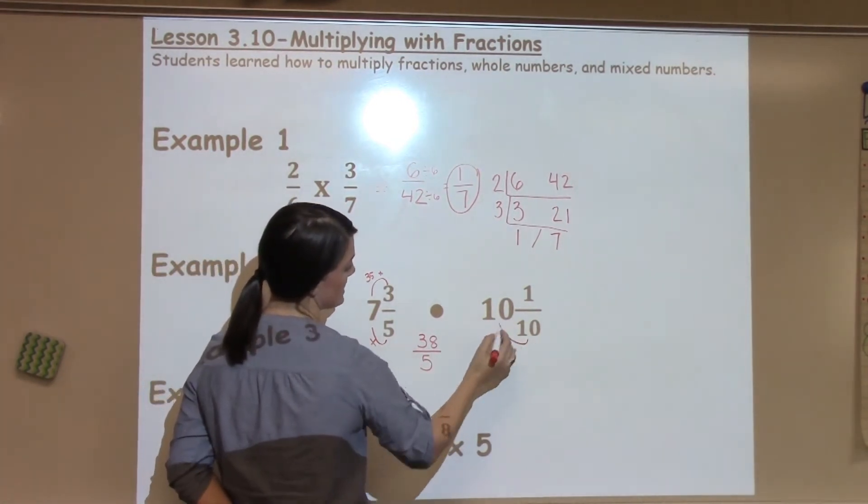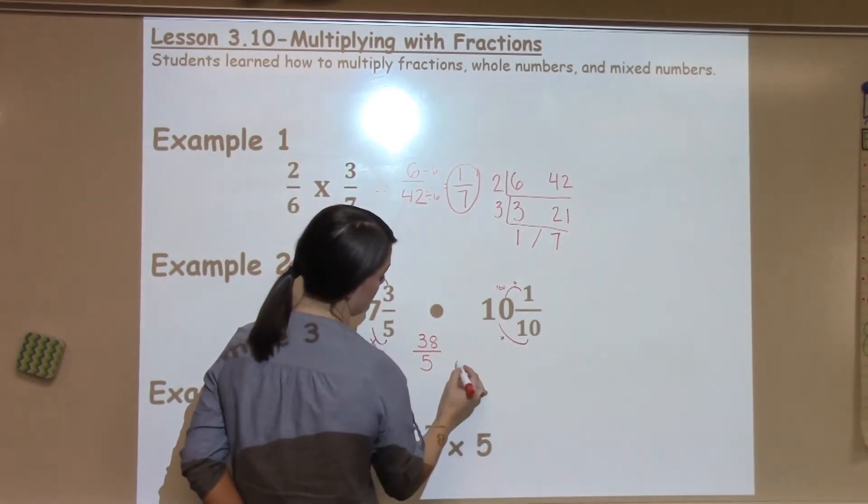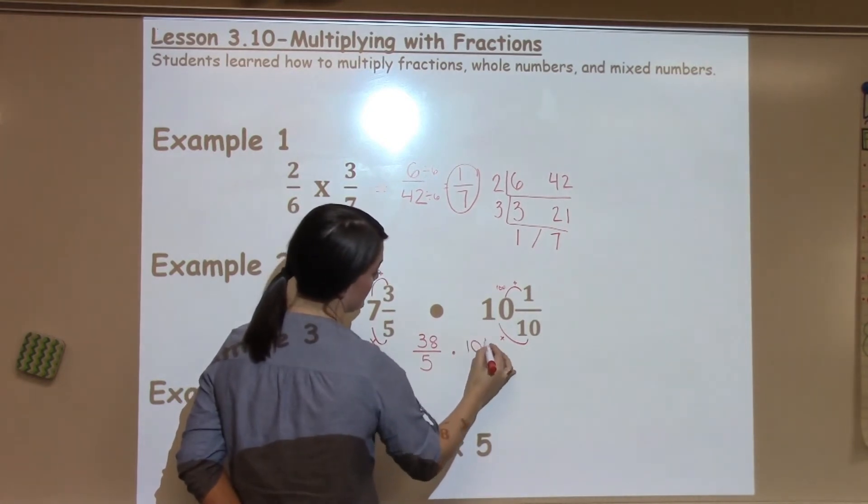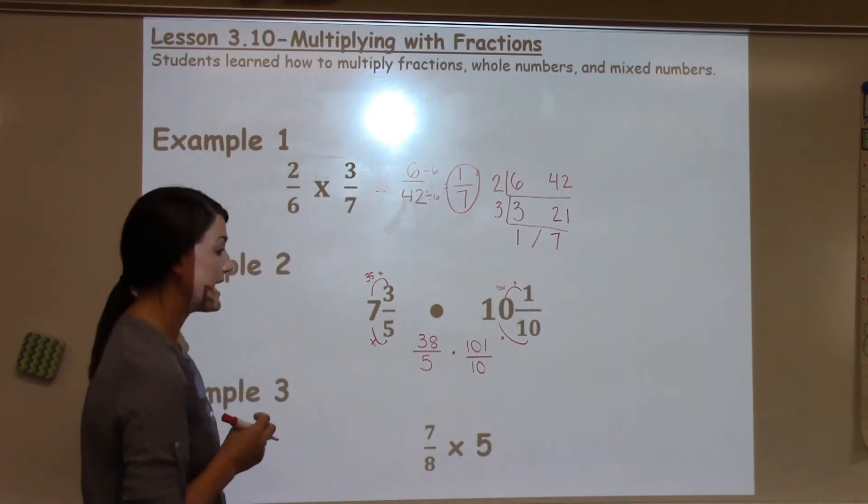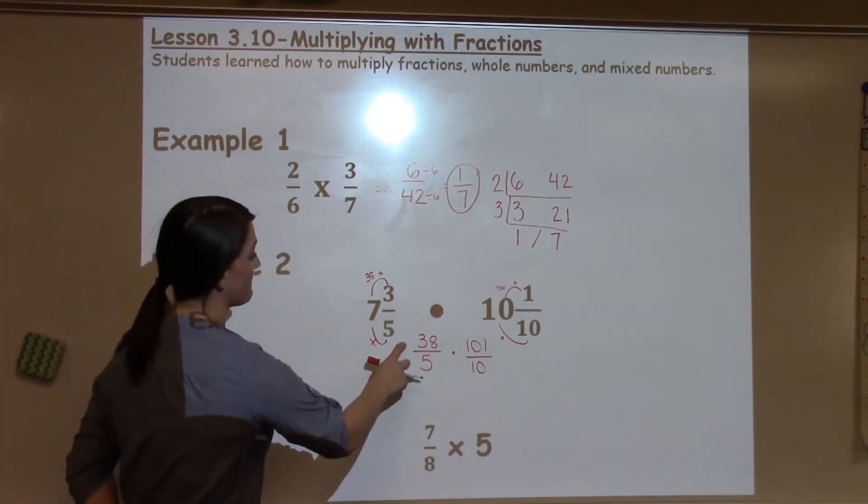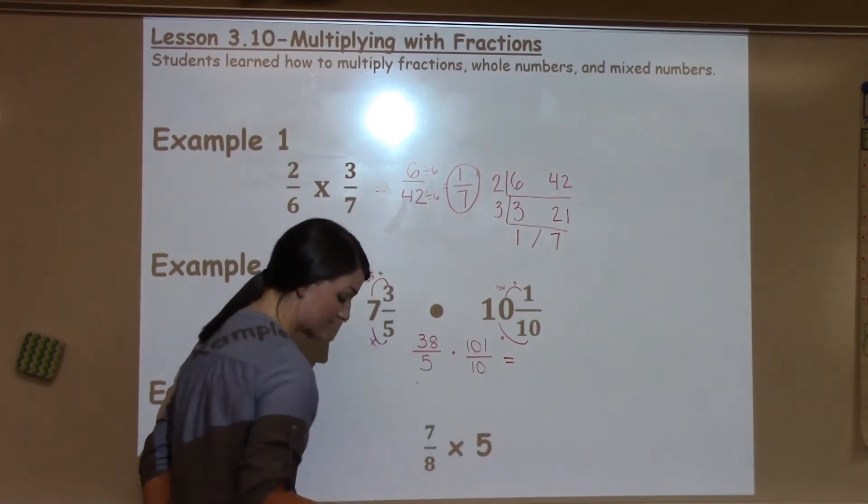I'm going to do the same thing here. 10 times 10 is 100. 100 plus 1 would be 101 over 10. My denominator stays the same. Now I do top times top, bottom times bottom to solve this fraction.